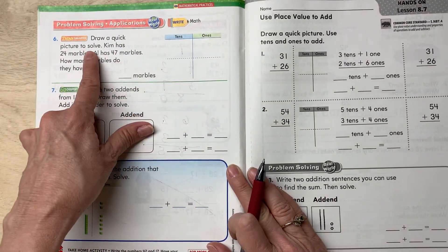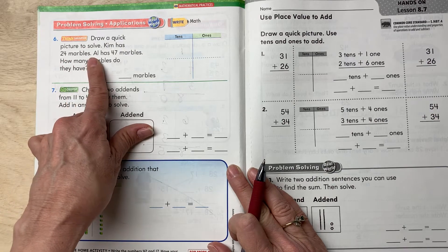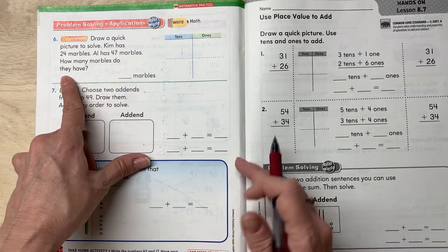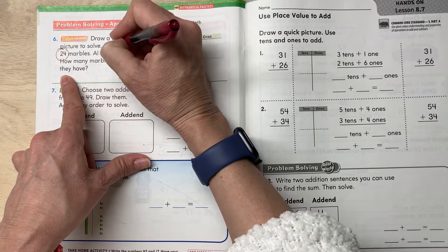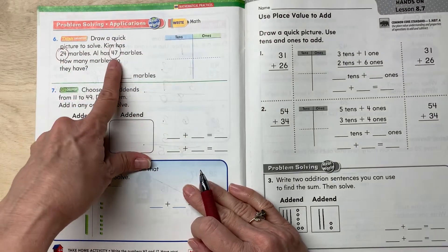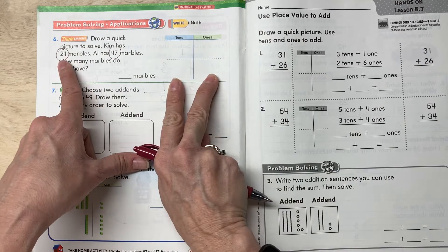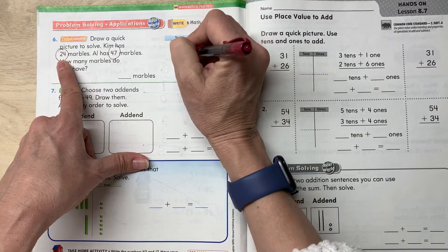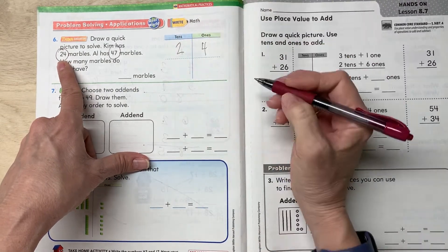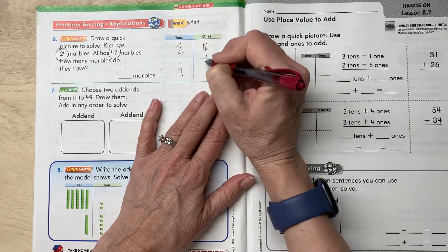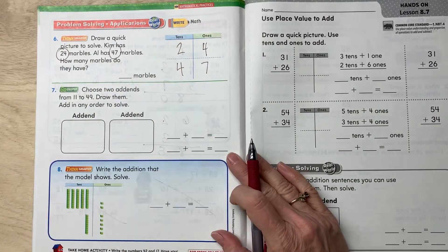Draw a quick picture to solve. Kim has 24 marbles. Al has 47 marbles. How many marbles do they have? Circle the numbers you're adding. You're adding 24 and 47. Let's put them on our tens and ones chart. Start with 24. Two tens, four ones. And then go to 47. Four tens and seven ones.